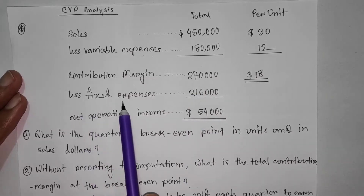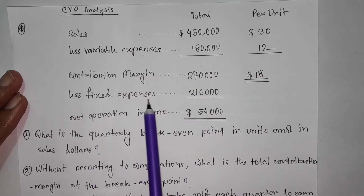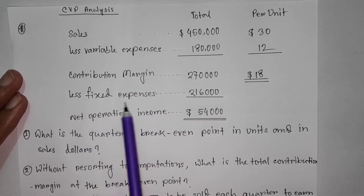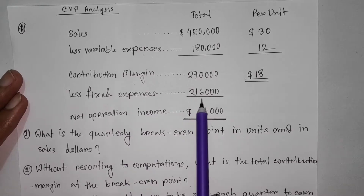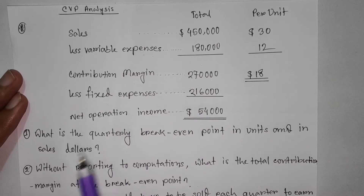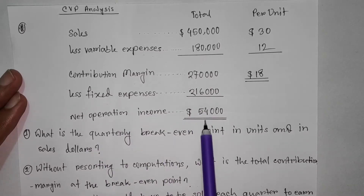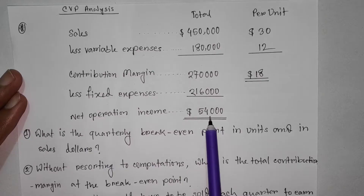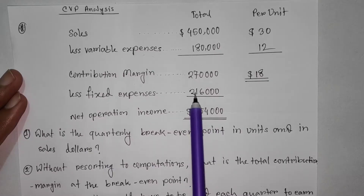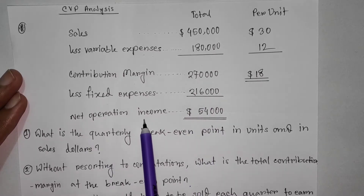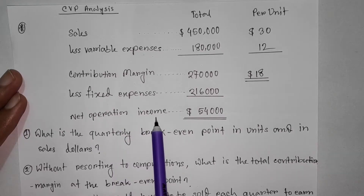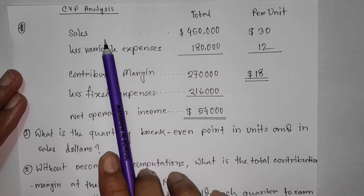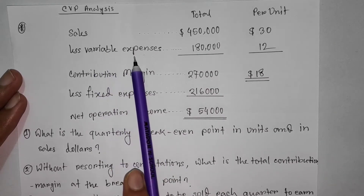The next fixed expense — fixed costs — is $2,000, and net operating income is $14,000. So we have net income, which is profit, which is profitable, but the profit relates to the total variable expense.